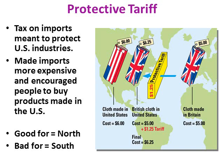To summarize: the tariff is a tax on imports meant to protect US industries and factories. It made imports more expensive and encouraged people to buy products made in the United States. This was good for the North and for factories, and bad for the South and farmers.